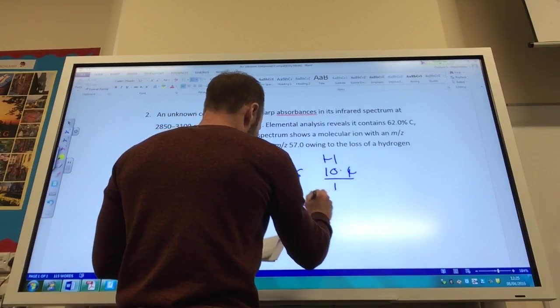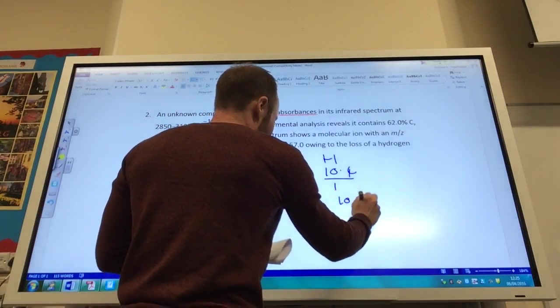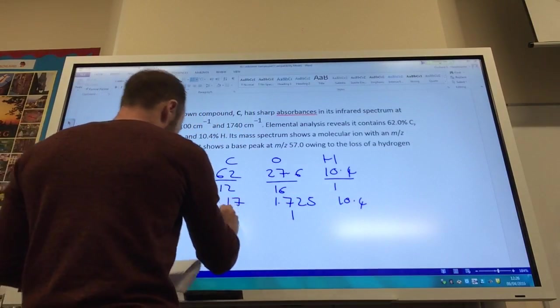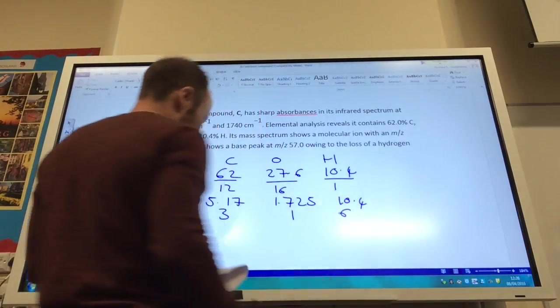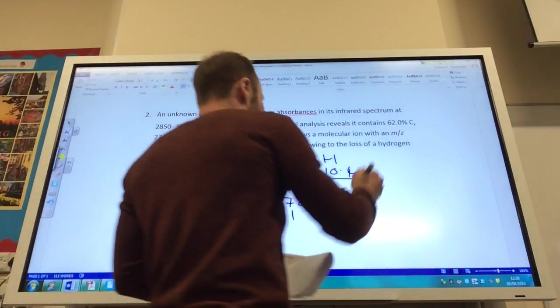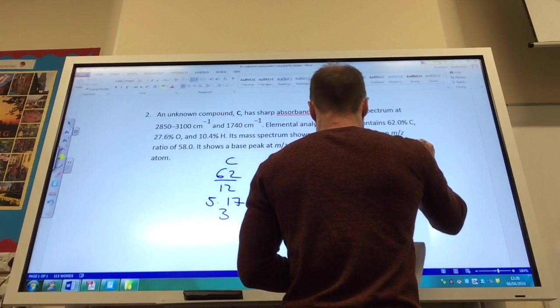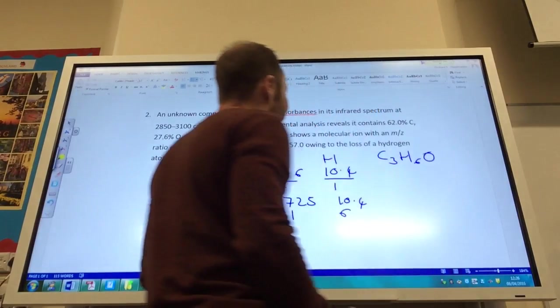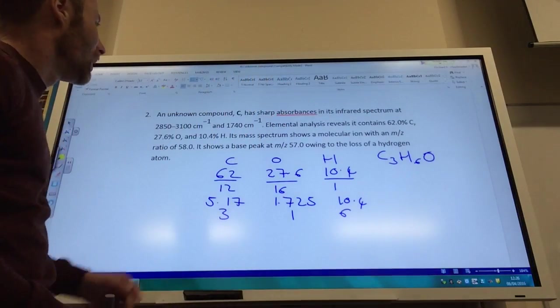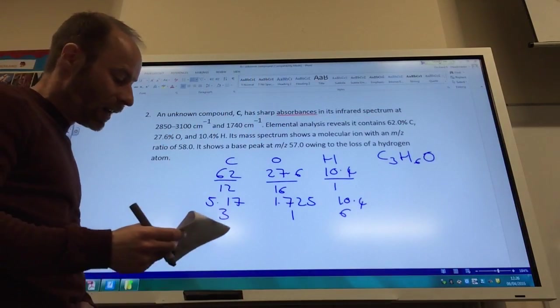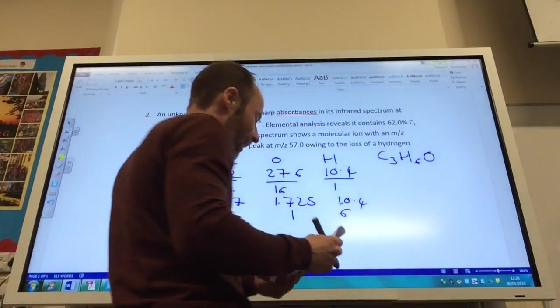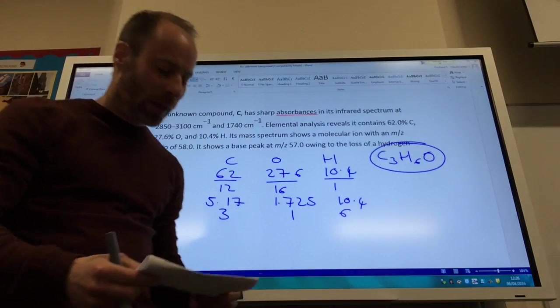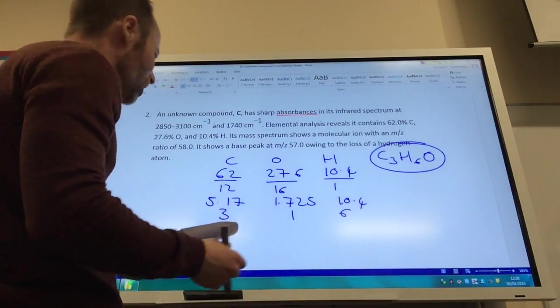Divide by the smallest one, which of course is this one, you get 1, 3, and 6. So that gives me an empirical formula of C3H6O. Does it add up to my molecular ion of 58? Yes, it does. So that is also my molecular formula as well, which is good.